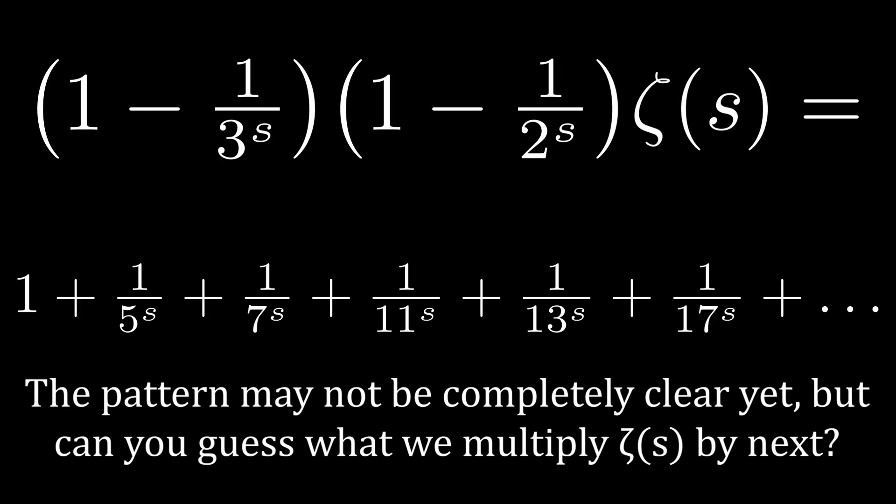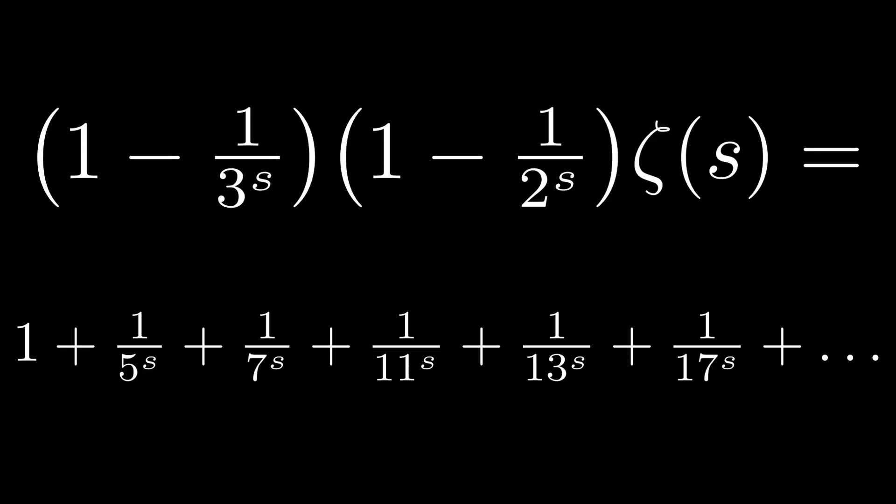You may notice something special about these first few terms in this infinite series. It turns out if we continue this procedure of multiplying ζ of s by 1 minus 1 over a prime number to the power of s for every prime number, it becomes clear that the other side of the equation is equal to 1.